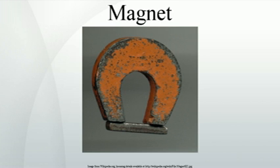Paramagnetic substances, such as platinum, aluminum, and oxygen, are weakly attracted to either pole of a magnet. This attraction is hundreds of thousands of times weaker than that of ferromagnetic materials, so it can only be detected by using sensitive instruments or using extremely strong magnets. Magnetic ferrofluids, although they are made of tiny ferromagnetic particles suspended in liquid, are sometimes considered paramagnetic since they cannot be magnetized.